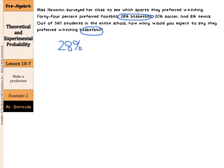We can take this 28% and write it over 100. And we can set up a proportion to find, out of the whole school, 560 is going to match the 100%. How many students can we predict prefer to watch basketball? We can cross-multiply here.